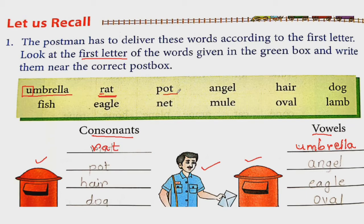Next word is pot. Pot's first letter is consonant P. So we will write P, O, T, pot. Next one, angel, A, N, G, E, L. Look here, what's the first letter? A. It is a vowel. So write A, N, G, E, L.